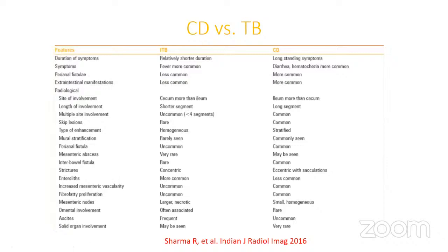Differentiation of ileocecal tuberculosis from Crohn's disease is an important topic — commonly faced at tertiary centers. These features guide us, though they are not absolute and overlap is very common. Cecal involvement along with the ileum, or contiguous involvement of cecum and ileum, is much more common in tuberculosis compared to Crohn's disease.